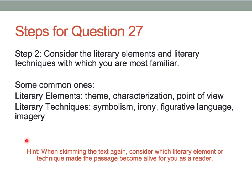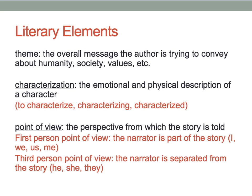Hint: when skimming the text again, consider which literary element or technique made the passage come alive for you as a reader — which of these techniques made you understand the text and get what the author was trying to say. Now I'd like to take a few moments to overview some of these literary elements and literary techniques. Firstly, theme. Theme is the overall message the author is trying to convey about humanity, society, and values.